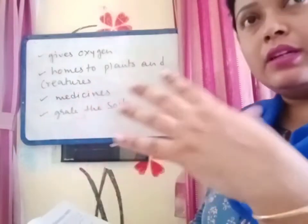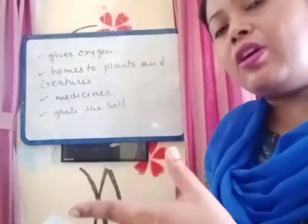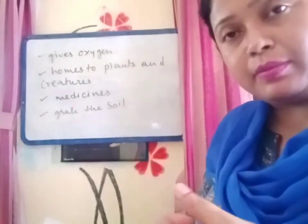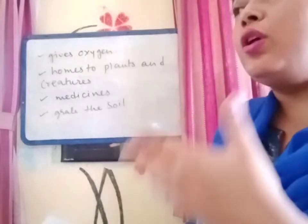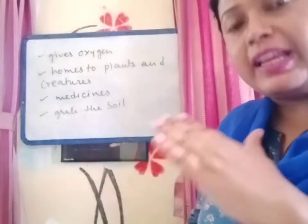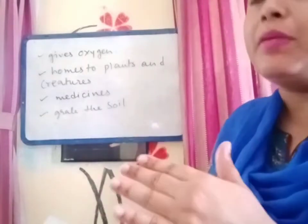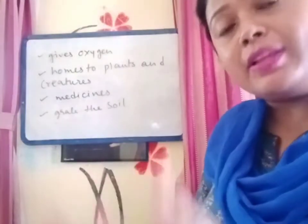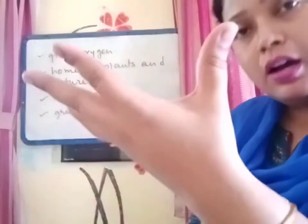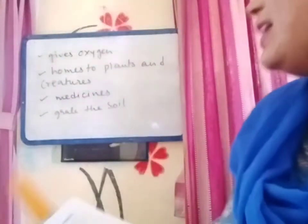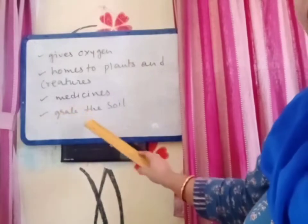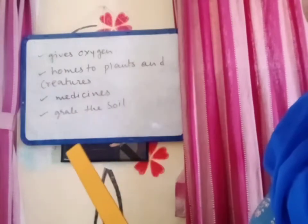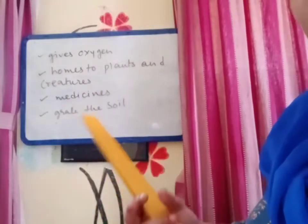Suppose when the rain falls, the raindrops cannot take the soil easily from the ground. But when we cut down a tree, there will be no roots. If there are no roots, then the rain will easily wash away the soil. That is why we say grab the soil — in hilly areas, forests help to protect the soil from being washed away by rain, as the strong roots hold the soil together.